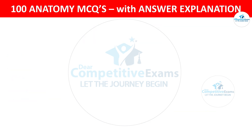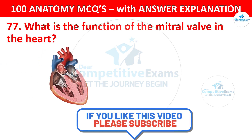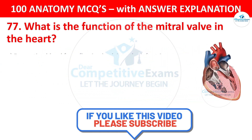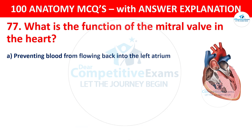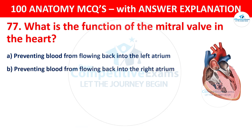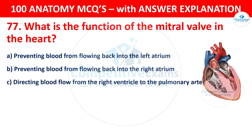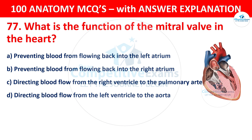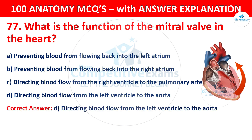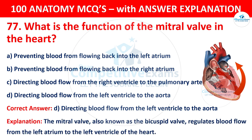Question number 77: What is the function of the mitral valve in the heart? The options are: Preventing blood from flowing back into the left atrium; Preventing blood from flowing back into the right atrium; Directing blood flow from the right ventricle to the pulmonary artery; or Directing blood flow from the left ventricle to the aorta. The correct answer is D — directing blood flow from the left ventricle to the aorta. The mitral valve, also known as the bicuspid valve, regulates blood flow from the left atrium to the left ventricle of the heart.